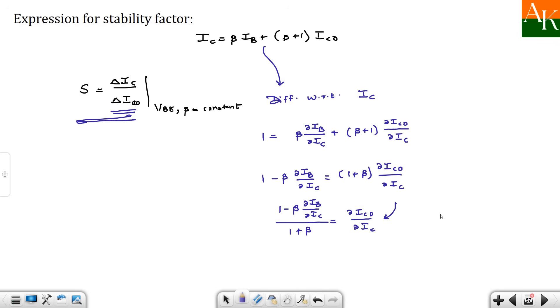And here you will have 1 plus beta ICO by delta ICO. So you have to take reciprocal of this one. So S is equal to delta IC by delta ICO and here we have that formula for the stability factor and it will be 1 plus beta and here you will have 1 minus beta times delta IB by delta IC.